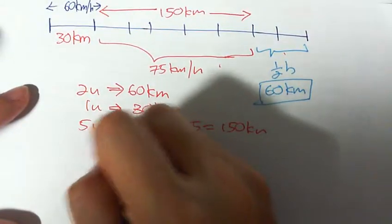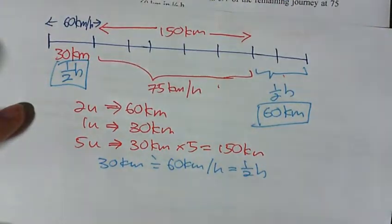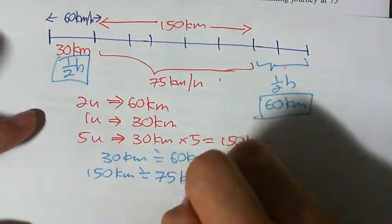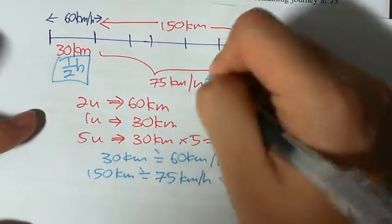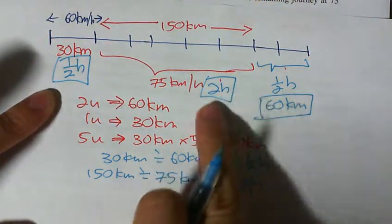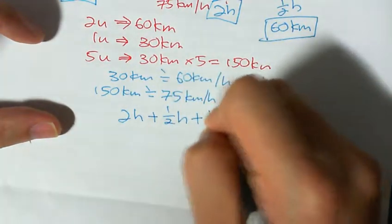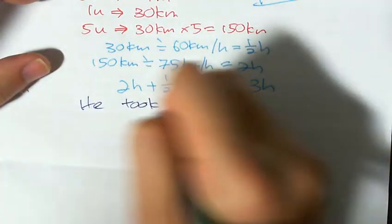Next, we find the time. The first portion: 30 km divided by 60 km/h equals half an hour. The middle portion: 150 km divided by 75 km/h equals 2 hours. The last portion is already given as half an hour. Total time: half an hour plus 2 hours plus half an hour equals 3 hours.